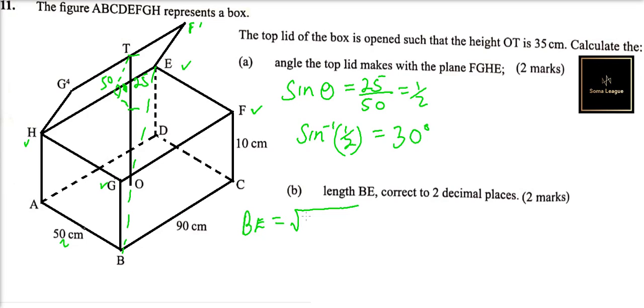And therefore, we can say BE is equal to the square root, using the Pythagoras theorem, we can say it is the square root of BD squared plus DE squared. But we don't know BD.